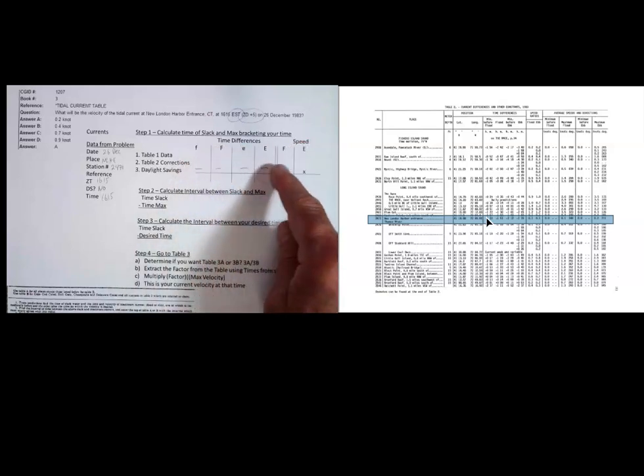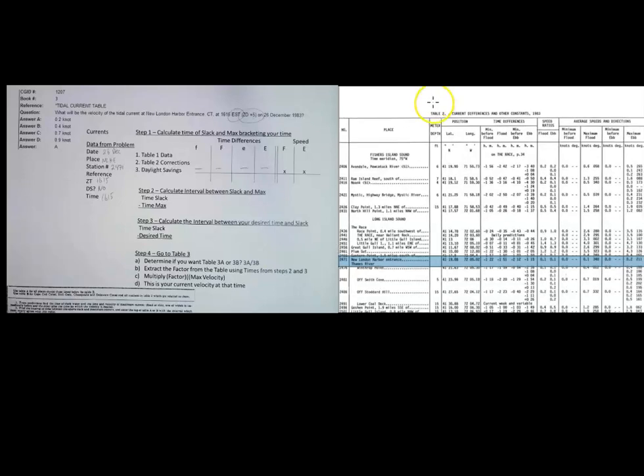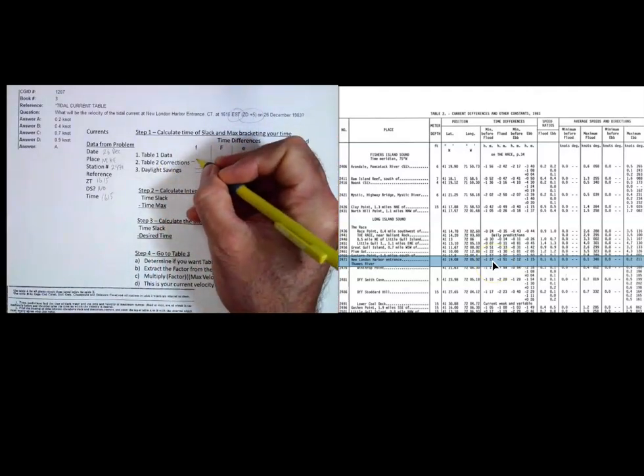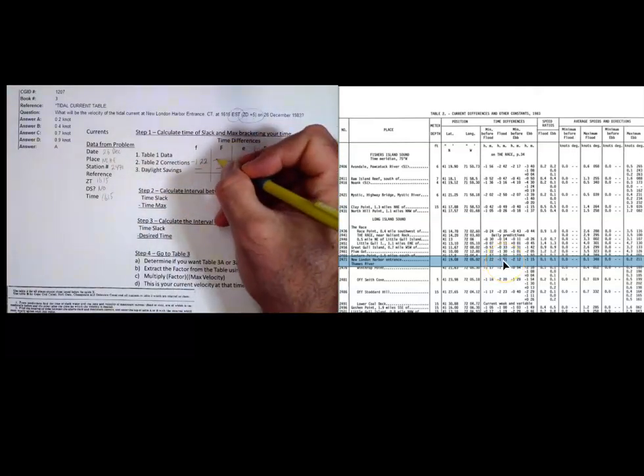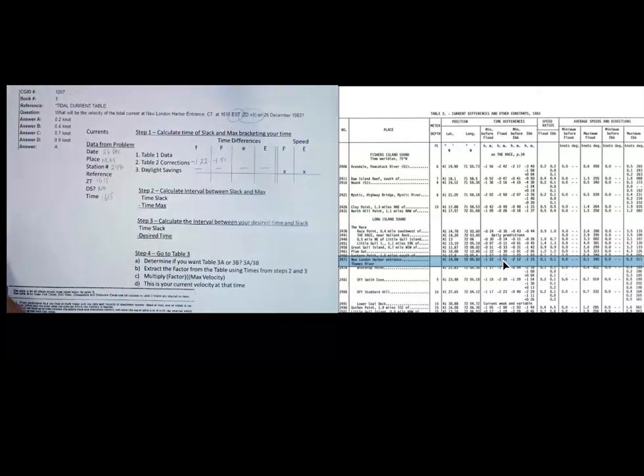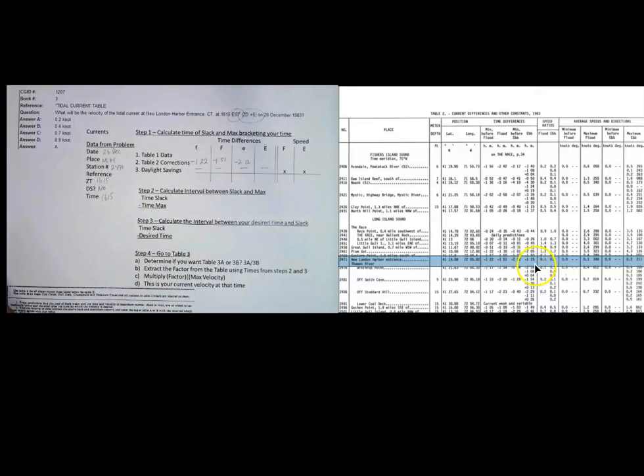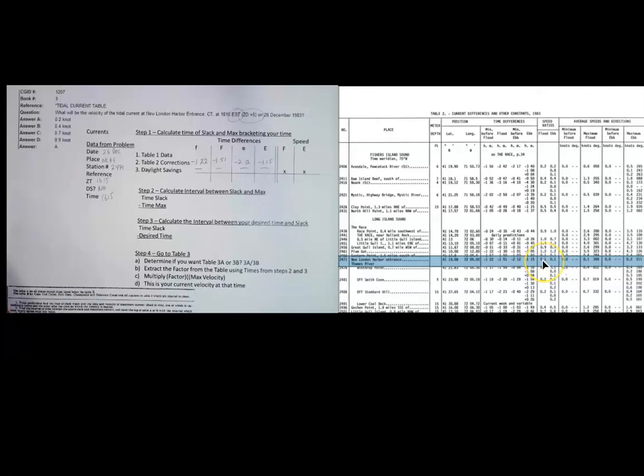These are my time differences, these are my speed ratios. So I'm going to copy these numbers right onto my sheet here. You can see I've got six columns on my sheet. Let me just zoom in on that. So this one right here is minus one hour, 22 minutes. That's going to go here in the table two corrections, minus 1:22. Then minus 1:51. This one is minus 2:12. This one is minus 1:15. And then the speed ratios are 0.1 and 0.1.